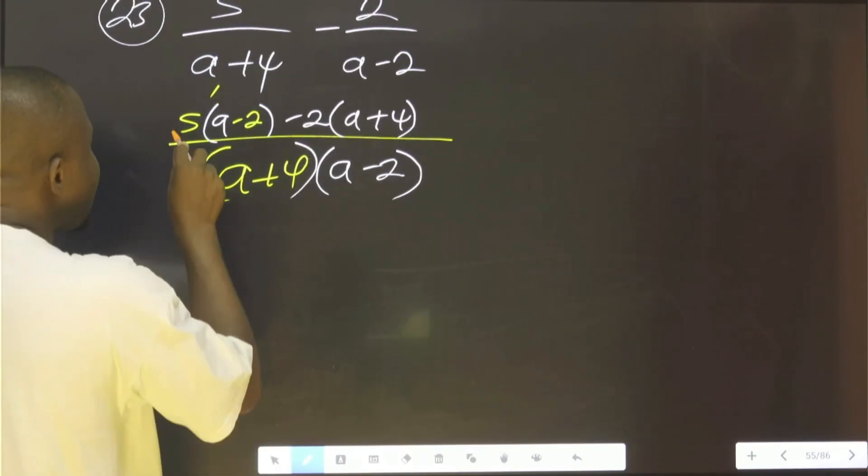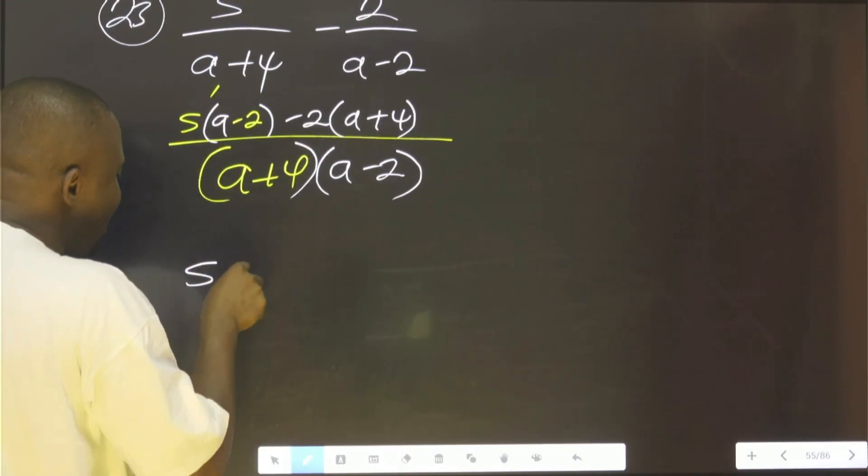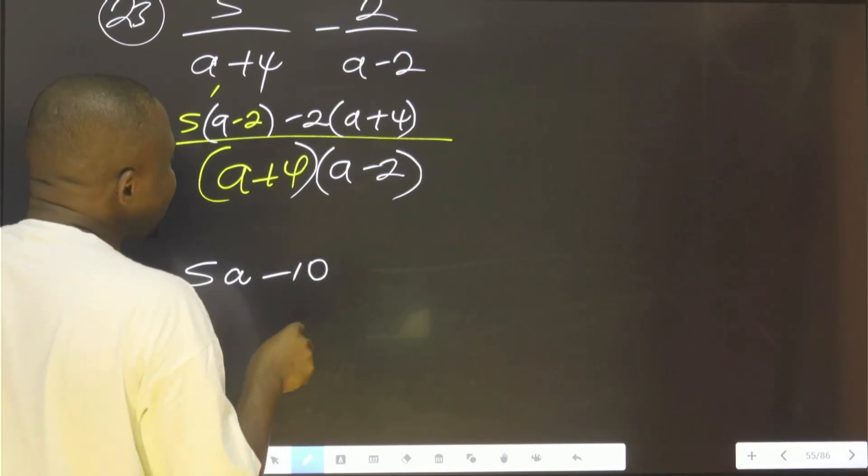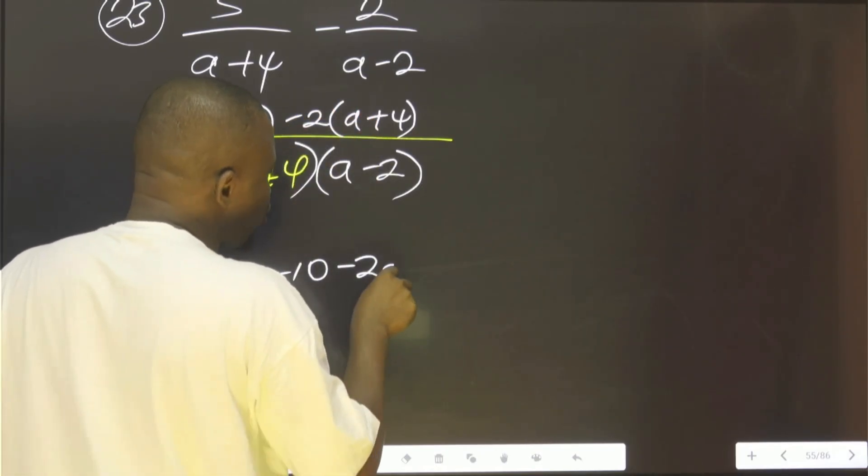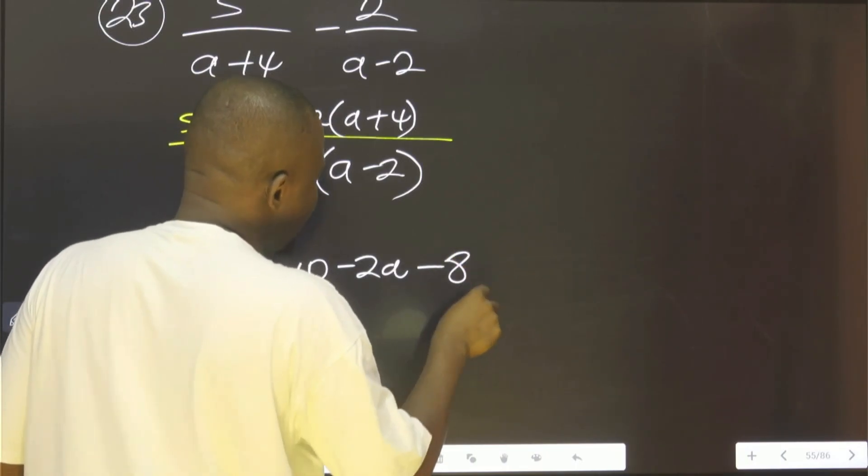Then we continue. This multiplied by this will give us 5, a minus 10. This is minus 2, a minus 8 all over.